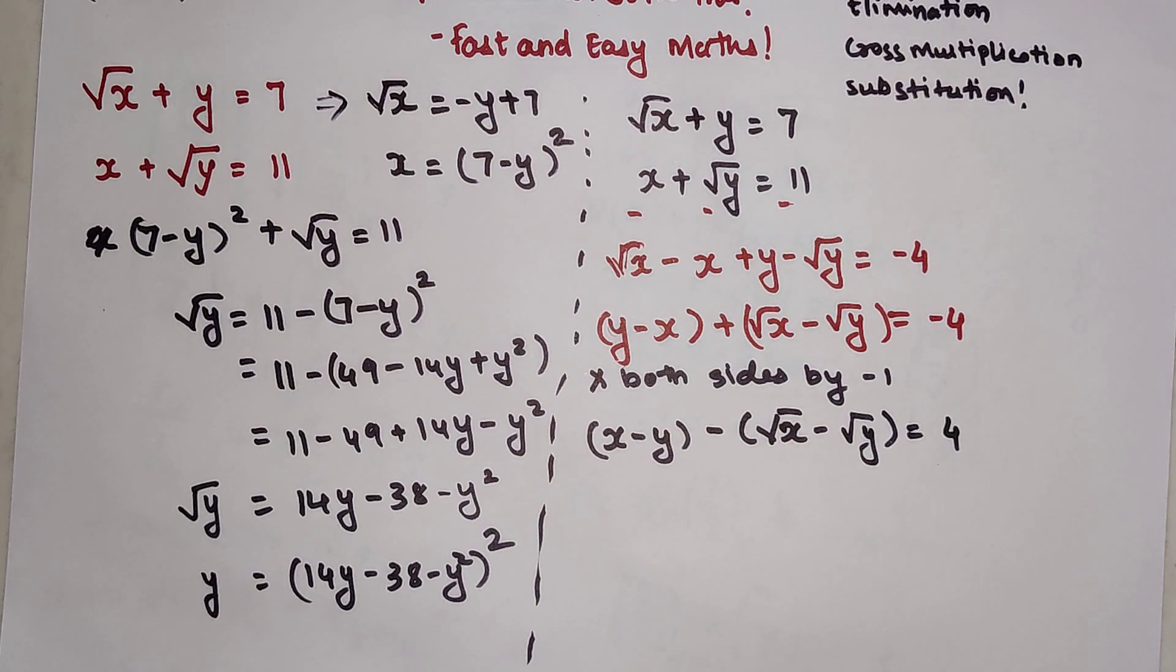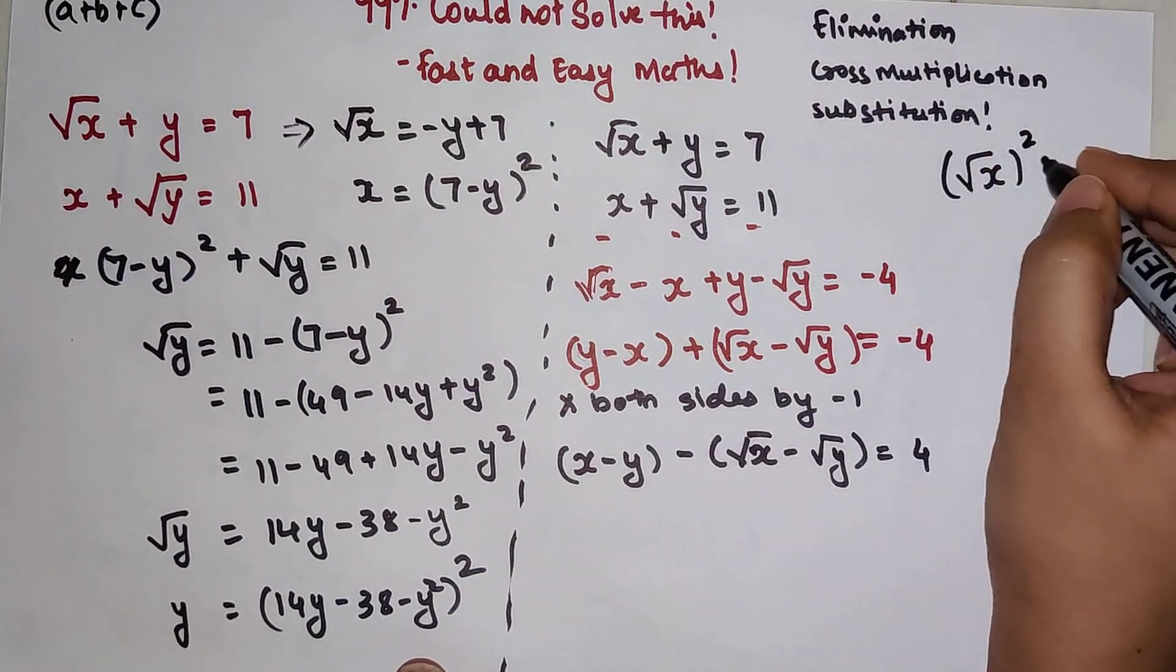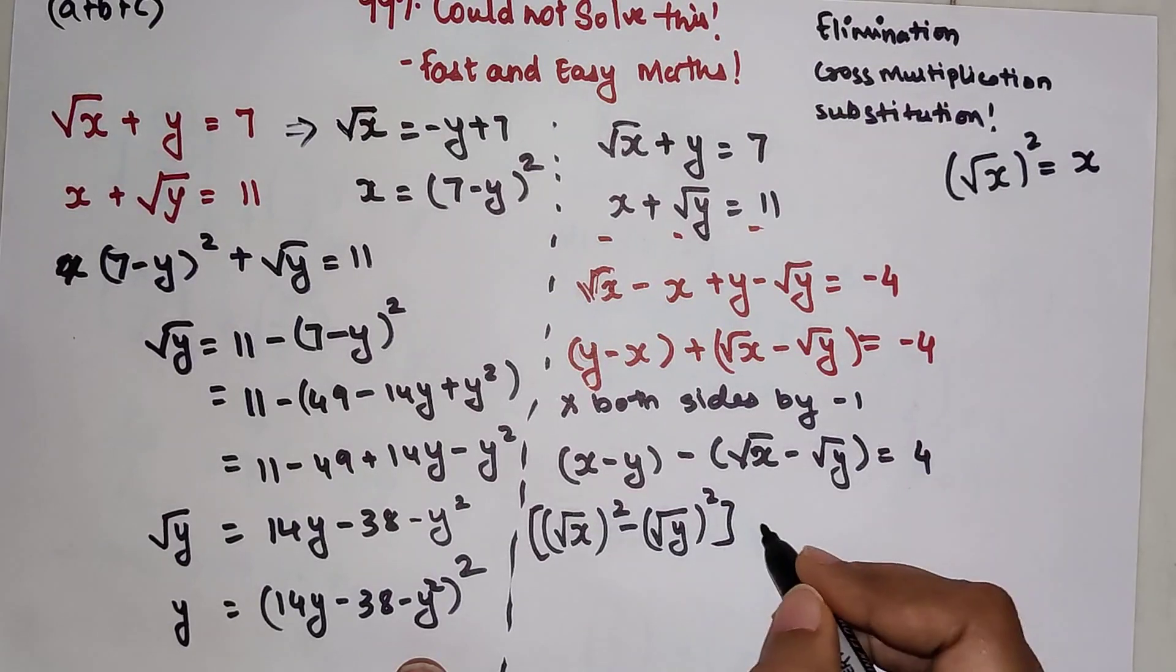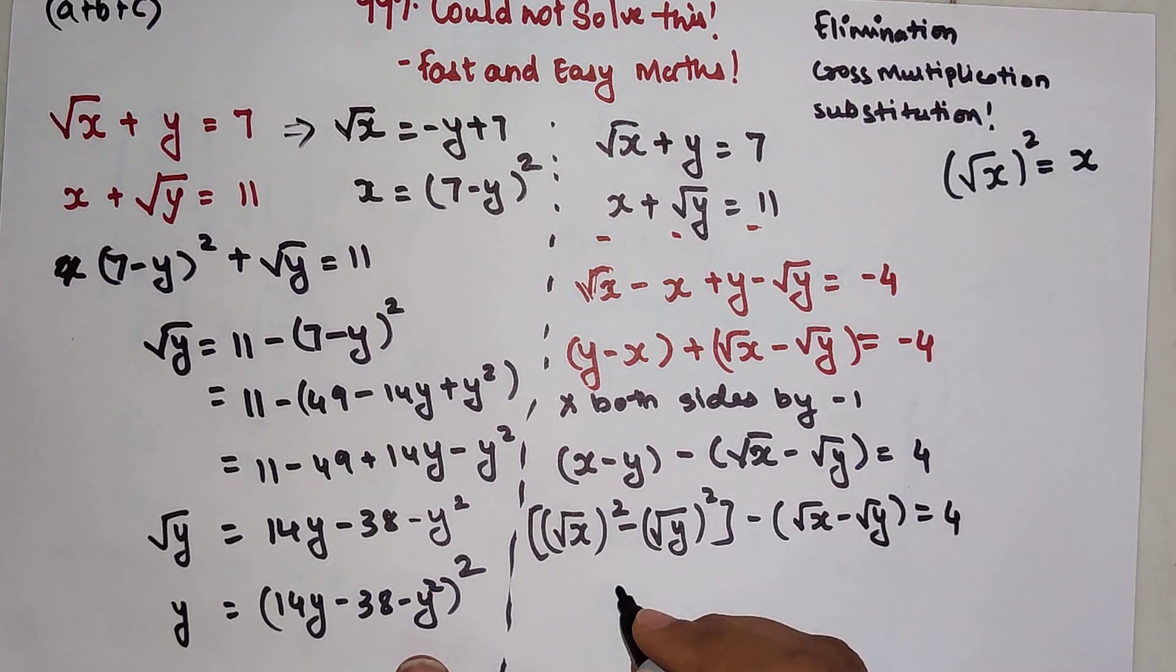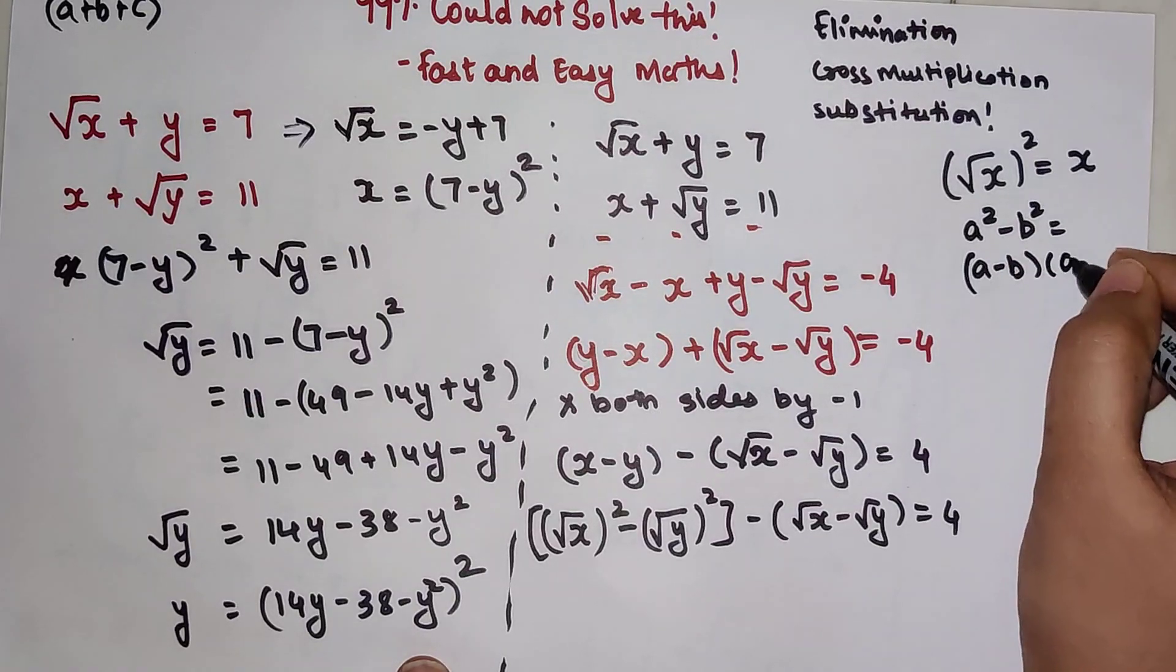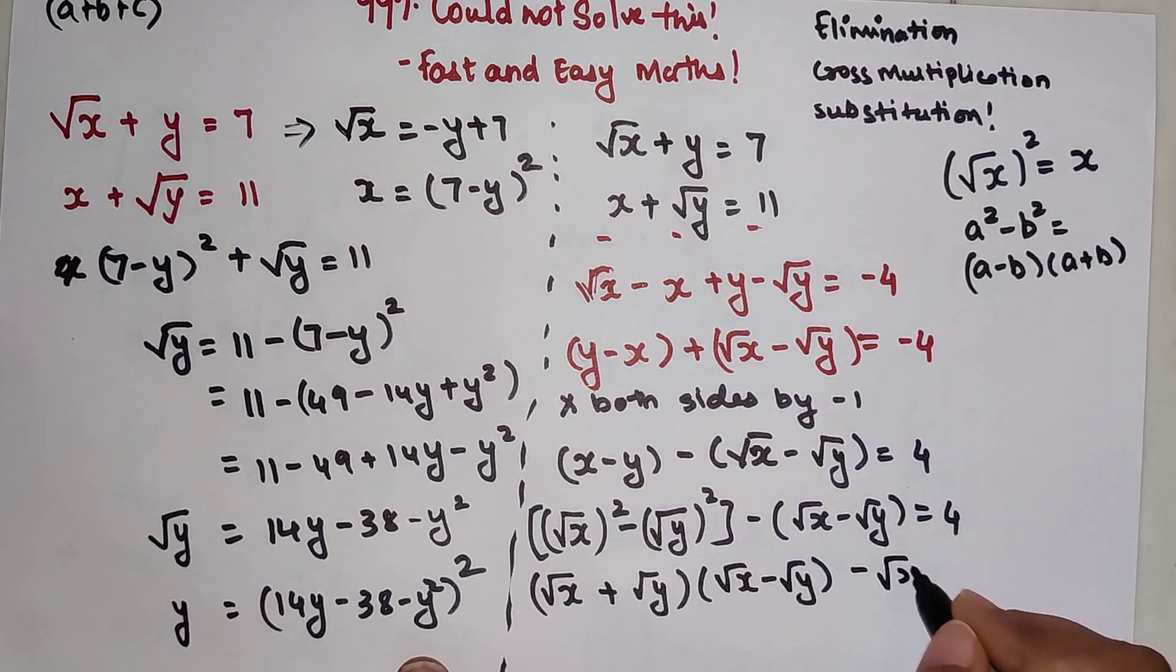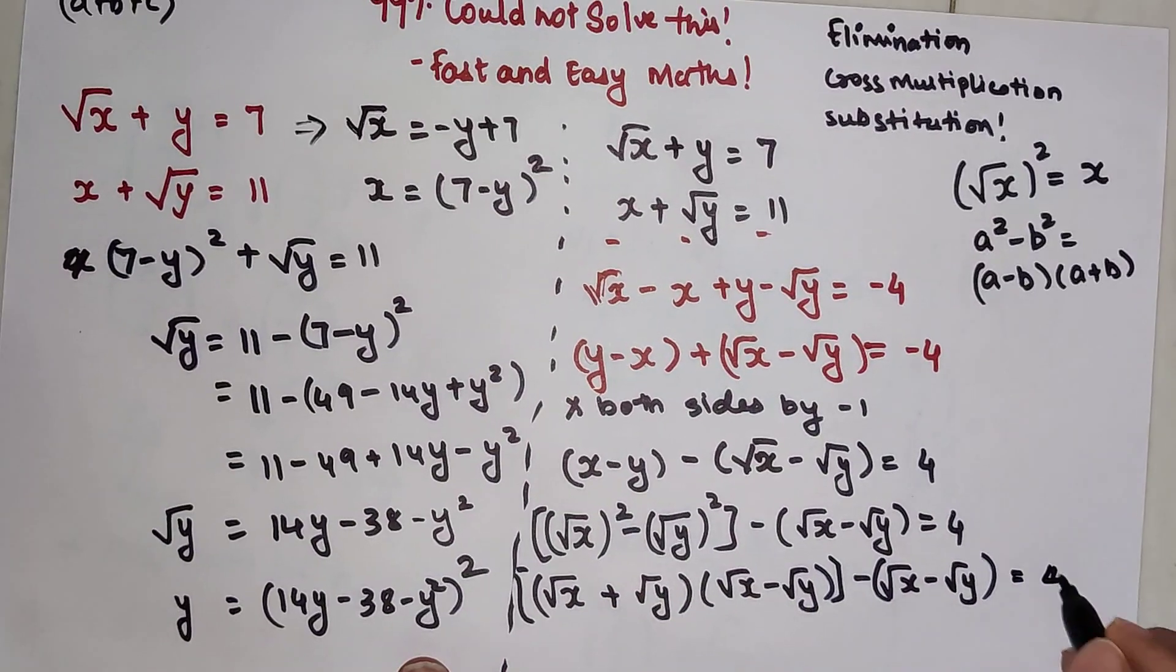x can be written as root x the whole square. I can write x as root x the whole square, and y as root y the whole square minus root x minus root y equals 4. This is a square minus b square. The expansion is a minus b into a plus b. This can be written as root x plus root y into root x minus root y minus root x minus root y equals 4.